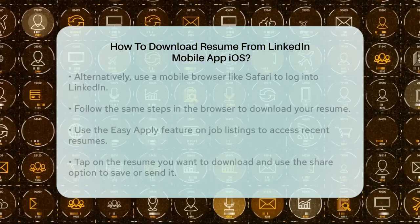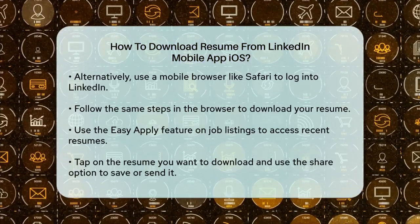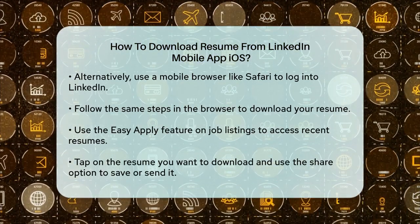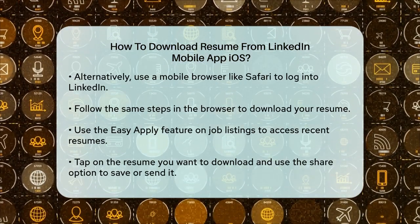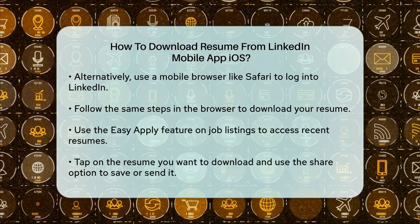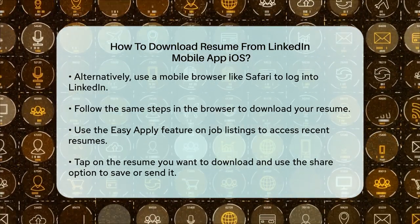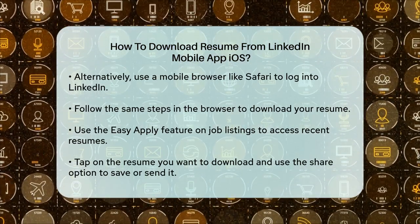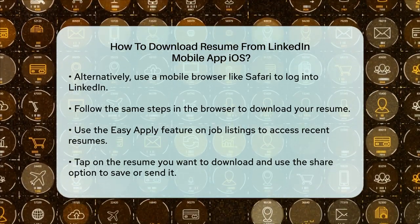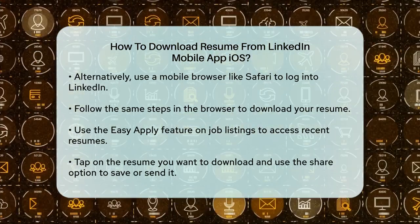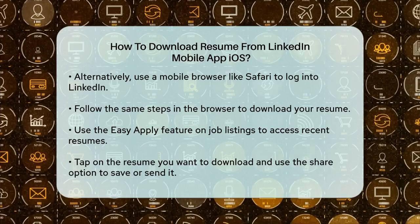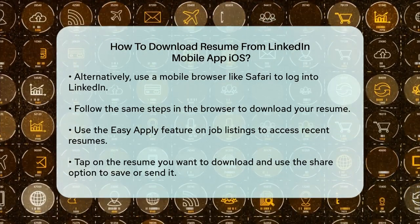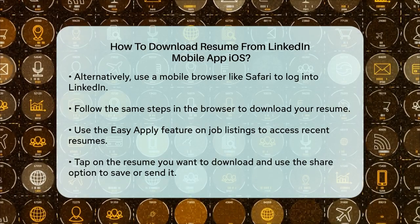Using the Easy Apply feature is another way to access your resume on the mobile app. Find a job listing with the Easy Apply option, tap on it, and proceed to the Resume Submission step. Here you'll see your recent resumes used for Easy Apply applications. Select the resume you want to download and use your phone's share option to save, email, or send it as needed.